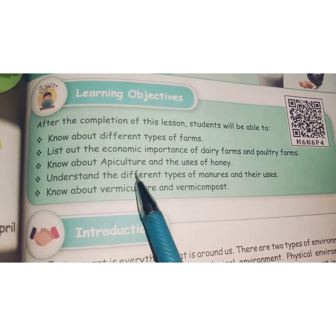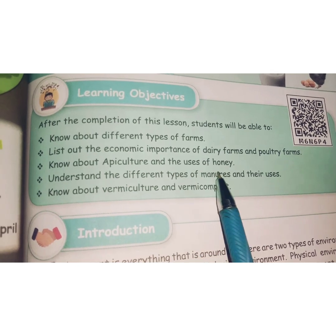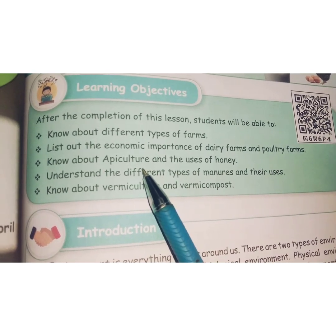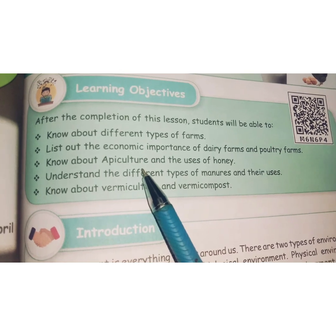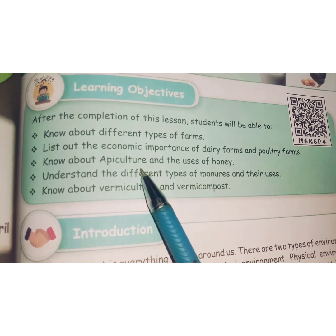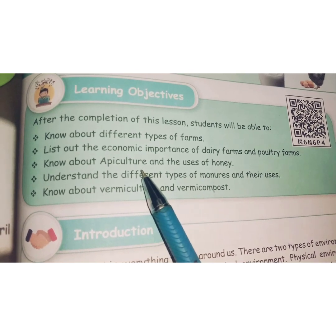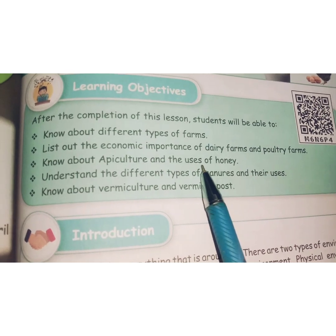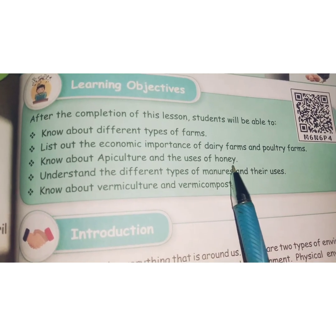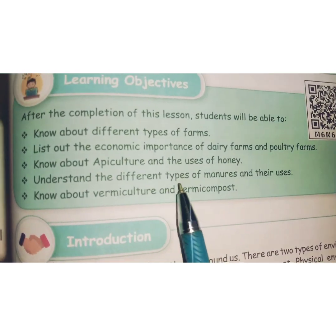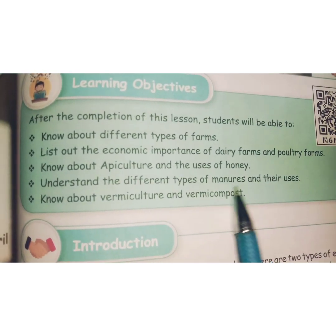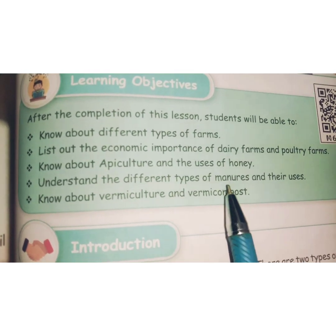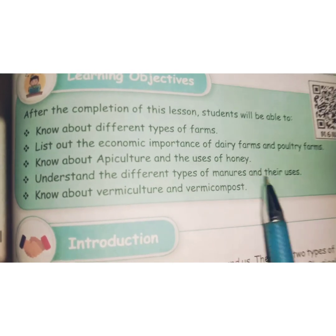Students will know about apiculture and the uses of honey. Apiculture means artificially rearing bees, collecting honey, and using it. Students will also understand the different types of manures and their uses — that is, different kinds of fertilisers and how each one is applied.